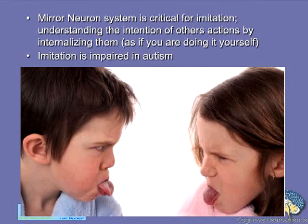So the mirror neuron system is obviously one that's very interesting to us in autism, since imitation is so critical in very early childhood. It's very frequently impaired in autism, and improvement in imitation is related to the rate of improvement in language acquisition, which is critically important. So we think of this mirror neuron system as being the basic critical system that's involved in internalizing the intentions of others and, therefore, understanding what is happening inside the brains of somebody else.